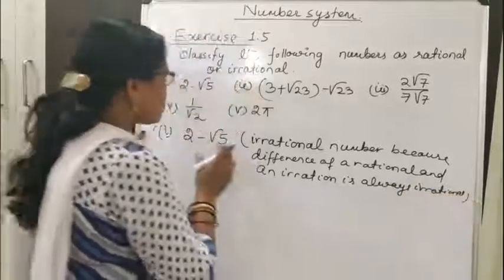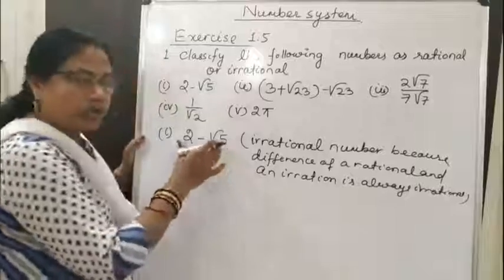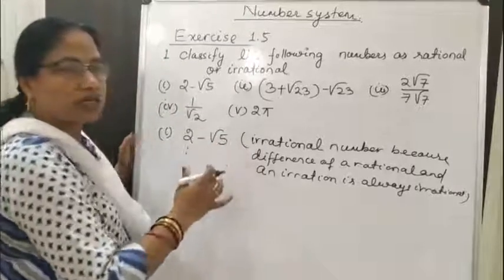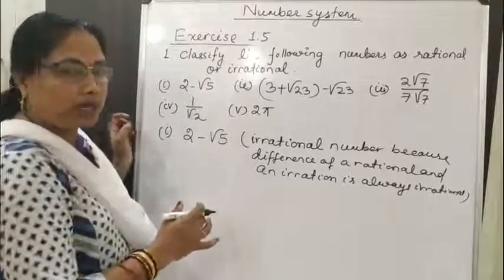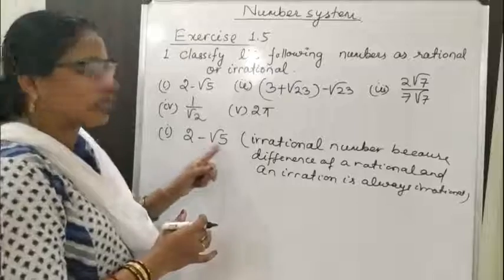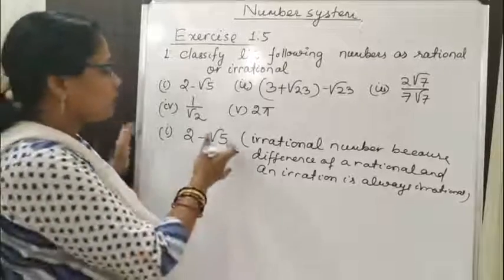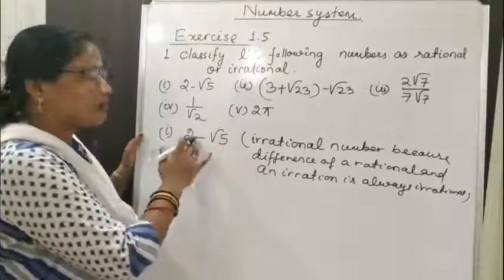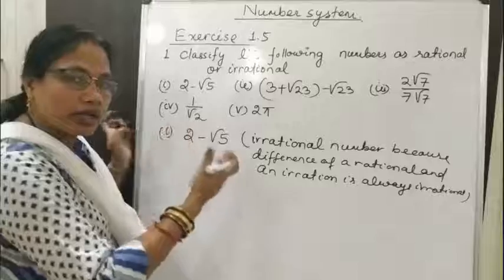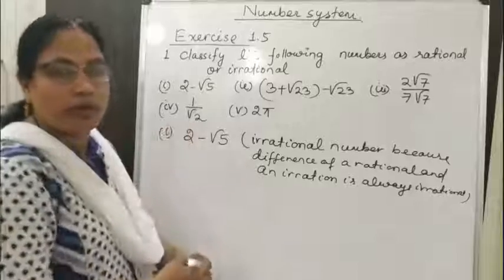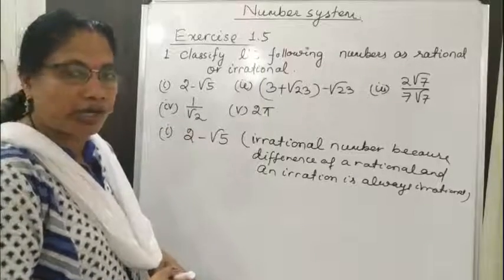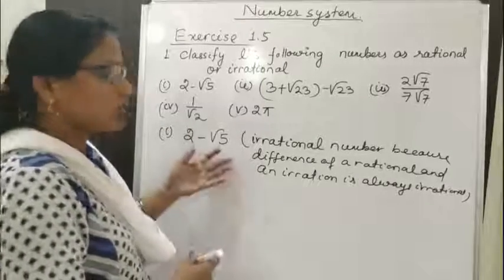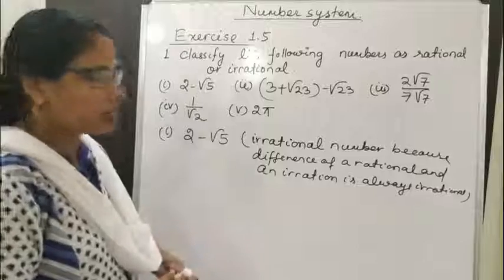Or, we can solve it another way. The decimal representation of √5 is non-terminating and non-repeating. And if we subtract that decimal number from 2, that also becomes a non-terminating, non-repeating decimal expansion. So that is an irrational number.